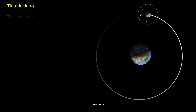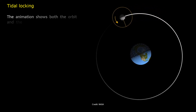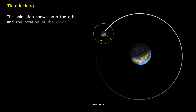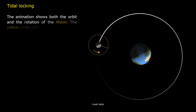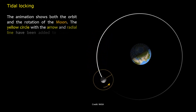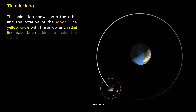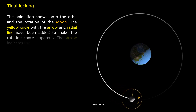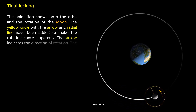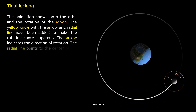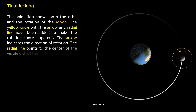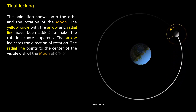The animation shows both the orbit and the rotation of the moon. A yellow circle with an arrow and radial line have been added to make the rotation more apparent. The arrow indicates the direction of rotation, and the radial line points to the center of the visible disk of the moon at 0 degrees north, 0 degrees east.